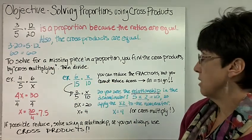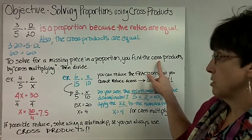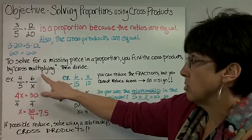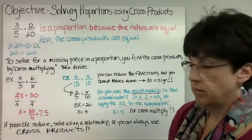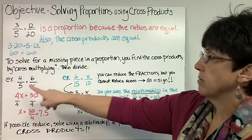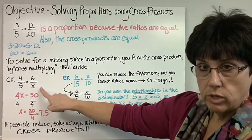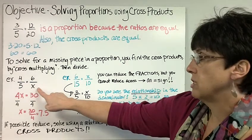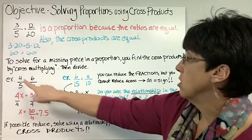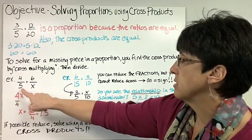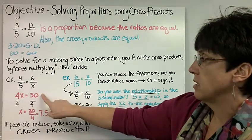To solve for a missing piece in a proportion, you find the cross products by cross multiplying and then divide. So here are two examples. The first one, 4 is to 5 as 6 is to what? Well, when we do our cross products, you always do the diagonal with the variable first. So 4 times x is 4x, and 5 times 6 is 30.